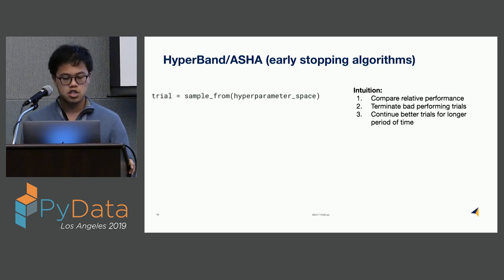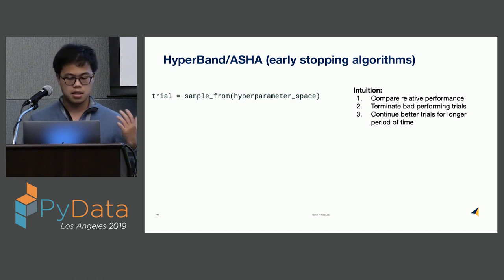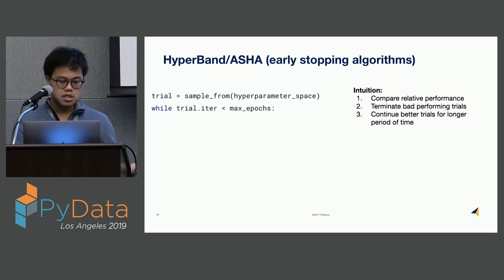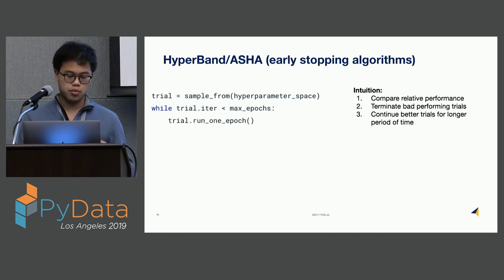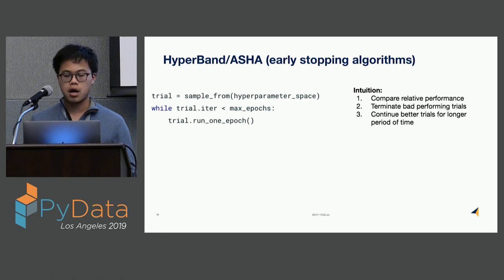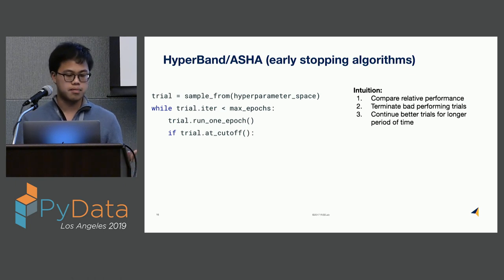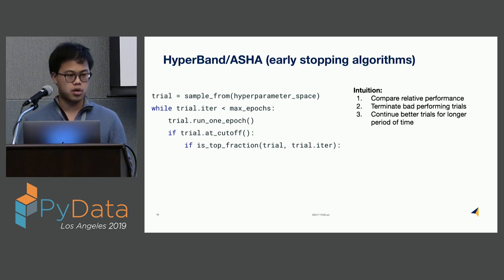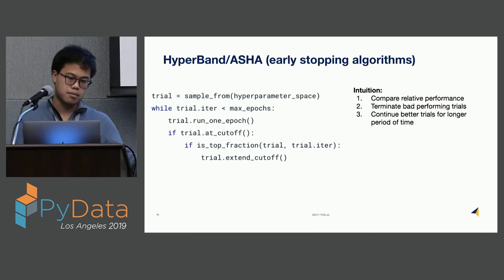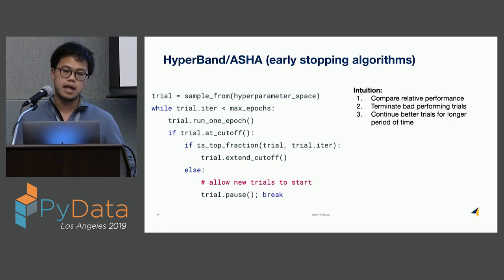Let's walk through the pseudocode. First, you sample from the hyperparameter space — the original paper assumes random search. You run the training with those hyperparameters until you hit a pre-designated cutoff. This cutoff is when you evaluate relative performance, not when you stop. If the trial's performance is in the top fraction — user-specified, usually one-third — of trials at that training iteration, then since we're one of the best, we keep running it. If not, we pause it and let another trial start.